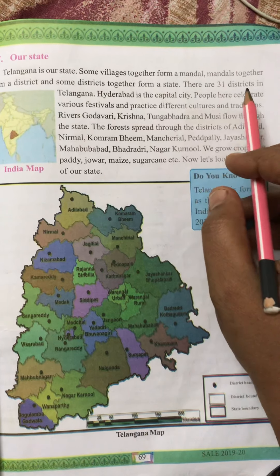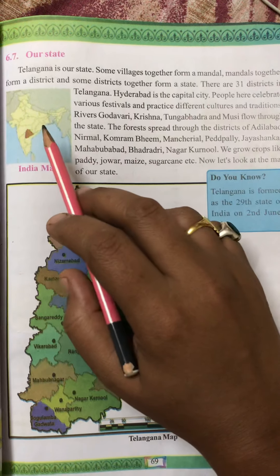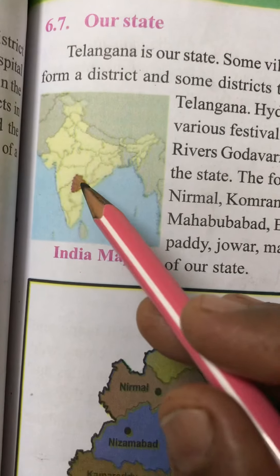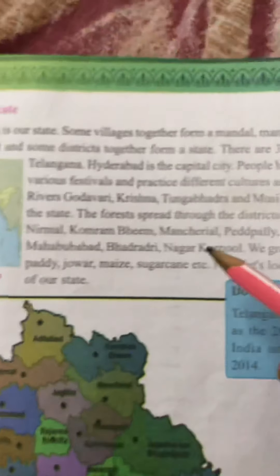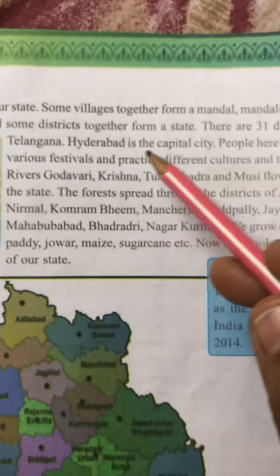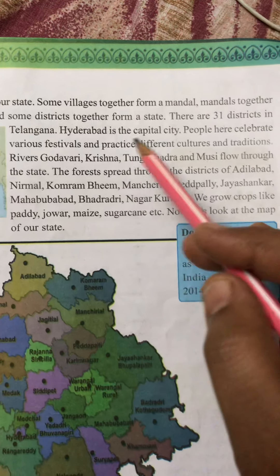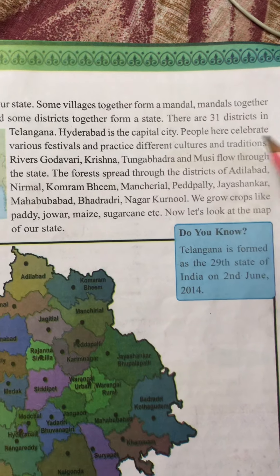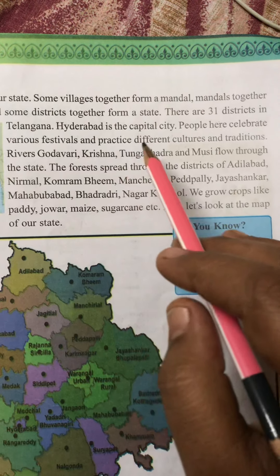There are 31 districts in Telangana. Here we can see Telangana on the India map. Hyderabad is the capital city of Telangana state. People here celebrate various festivals and practice different cultures and traditions.